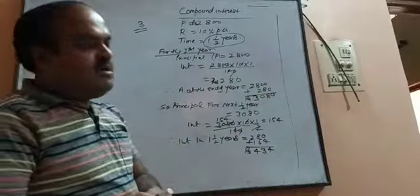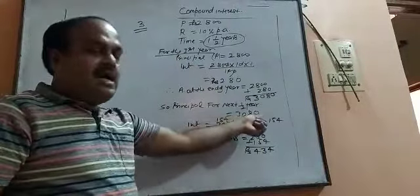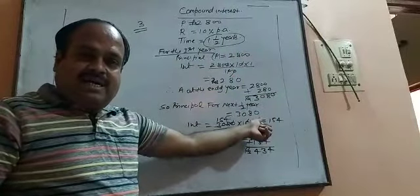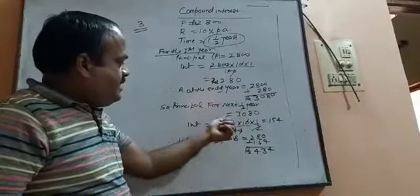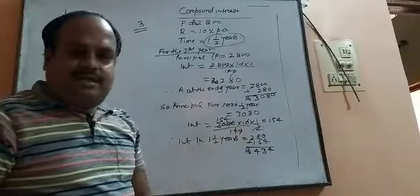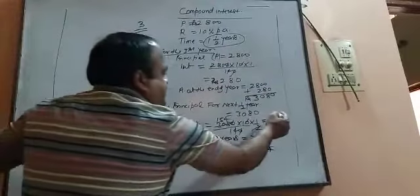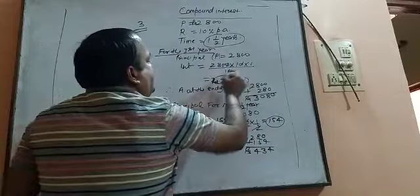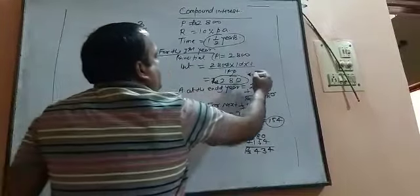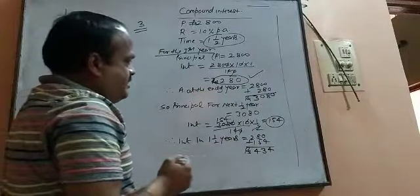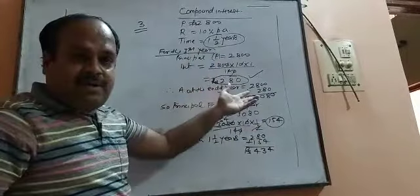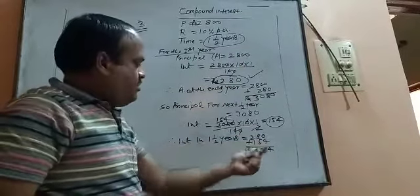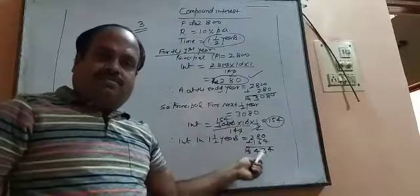Since the duration is 1 whole 1 by 2 years, I have to consider the next half year. So the principal is 3080, and the interest will be calculated using the same concept P into R into T, but here T we will consider as one half, because the duration is half. So 3080 into 10 into 1 by 2 upon 100, which comes as 154 rupees. So 154 rupees is the compound interest in the half year, and 280 is the compound interest in 1 year. Therefore the compound interest in 1 whole 1 by 2 years is 280 plus 154, which comes as 434 rupees.